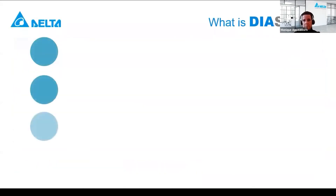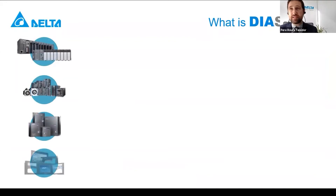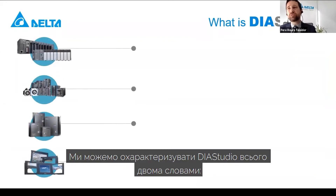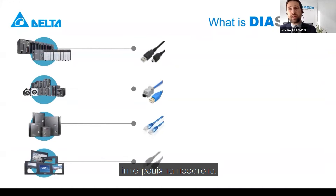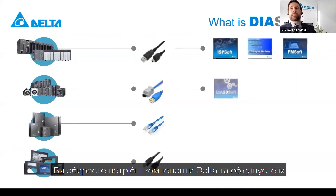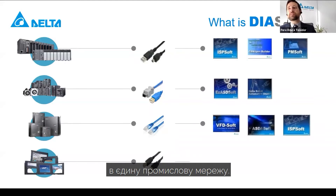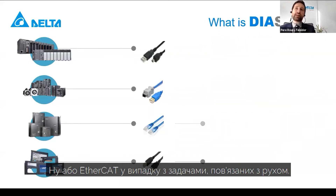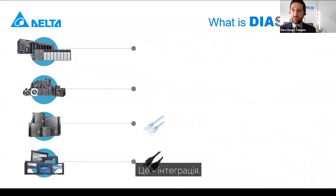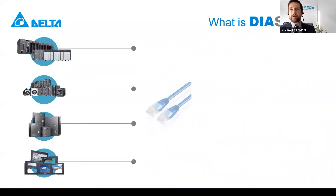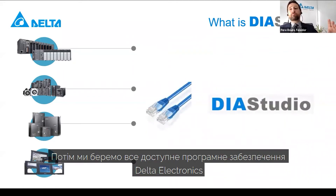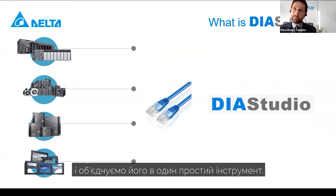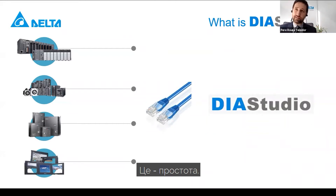And how does it work? Very simple. We can define DS Studio in two words: integration and simplicity. You pick up all Delta components and integrate them in one single fieldbus — in this case, Ethernet IP or EtherCAT for motion applications. That's integration. Then we take all the current Delta softwares and blend them into one single simple tool. And that's simplicity.